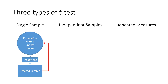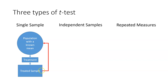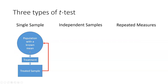The single sample t-test looks something like this: you have a population with a known mean, you remove from it a sample and give it a treatment, then compare that treated sample to the population that didn't have a treatment to see if there's a difference. Remember that it didn't have to be compared against a population with a known mean — it could be compared against a hypothesized value or some value based on logic or your specific research paradigm.